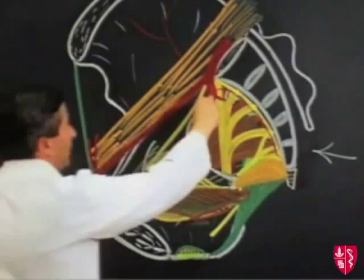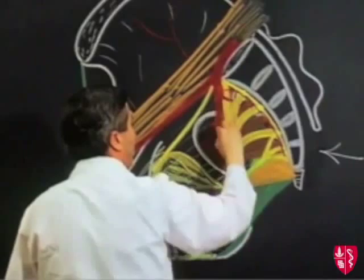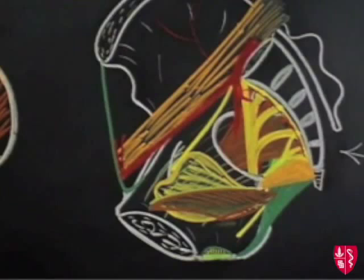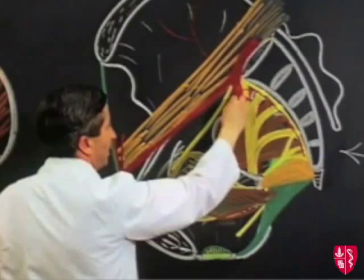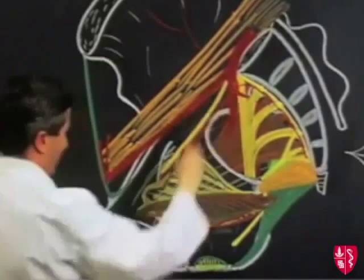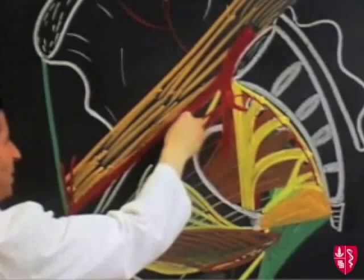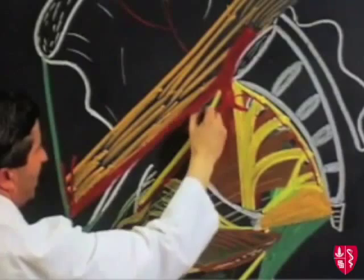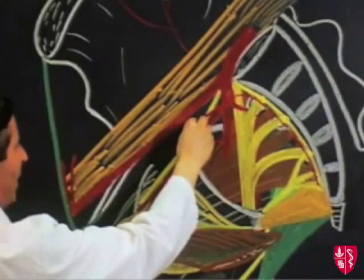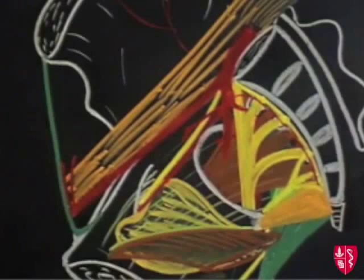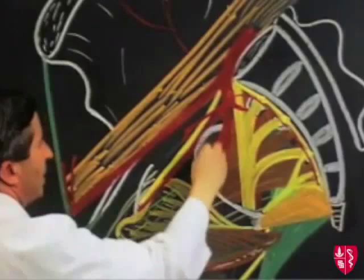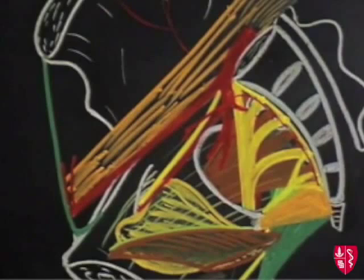The anterior division comes on down and divides into a number of branches to supply the viscera within the pelvis. One of its first branches is the obturator artery, which passes forward with the obturator nerve and disappears through the obturator canal into the thigh. Another branch is the obliterated umbilical artery, which still has a patent portion giving off a superior visceral branch to supply the upper surface of the bladder. From the rest of the anterior division we get branches like the uterine artery and the middle rectal artery.